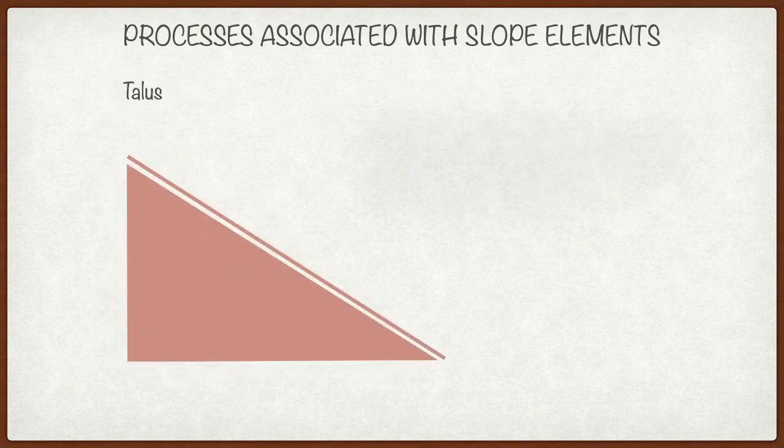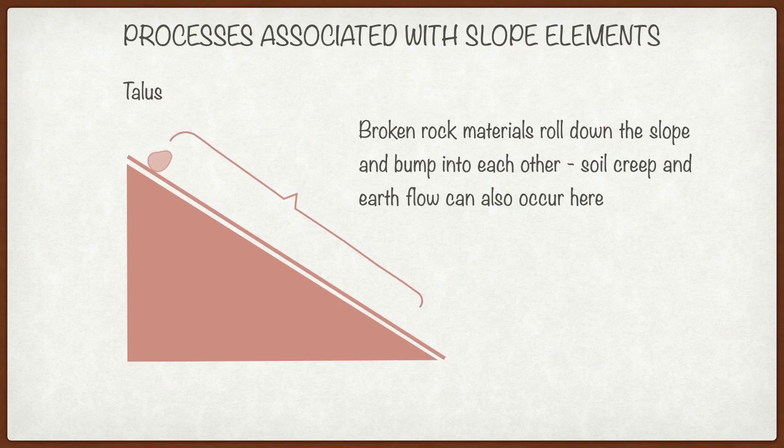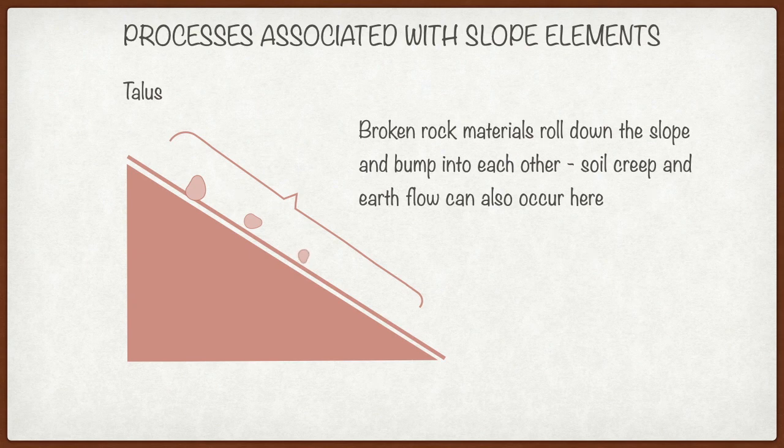Next we move on to the talus slope. Now we recall from the previous slide that the materials fall down onto the talus slope, so they roll along. As they roll along, they become a bit more rounded, then they bounce into each other and bump into each other. And when they bump into each other, they can cause them to move. As you see now in the animation, as they move,